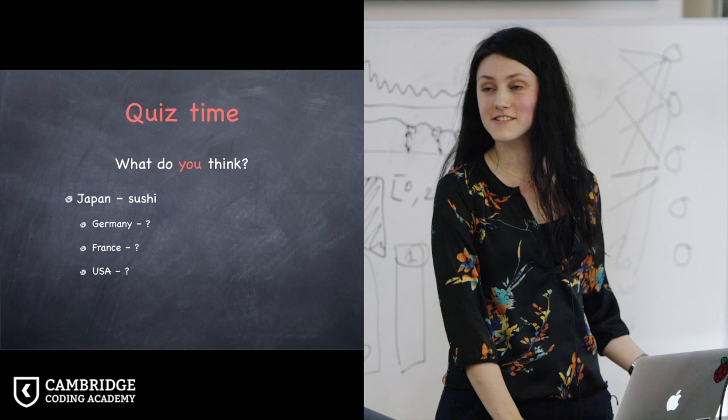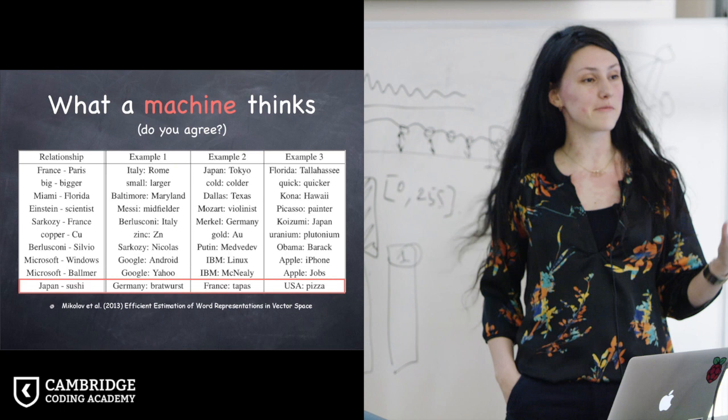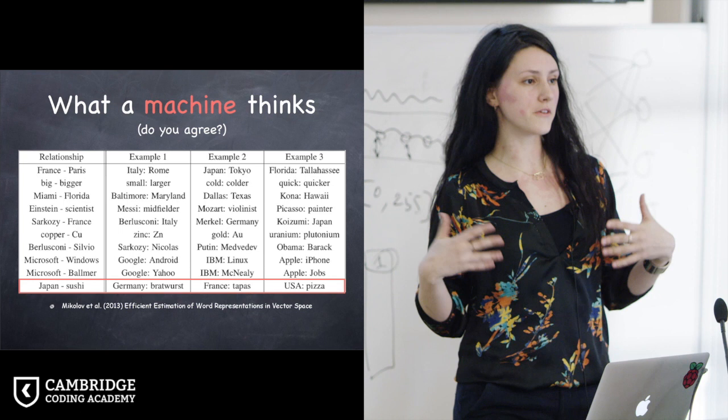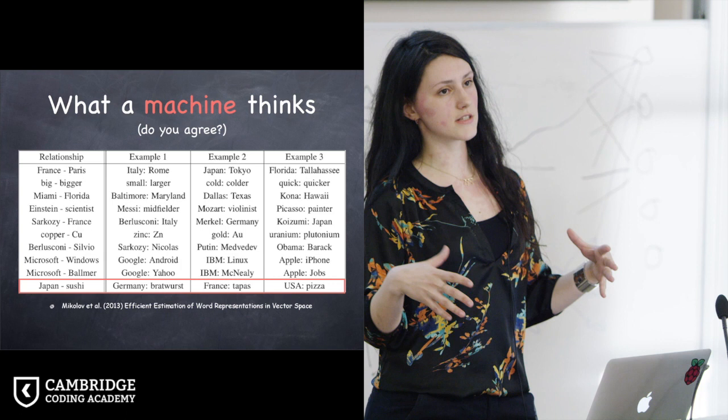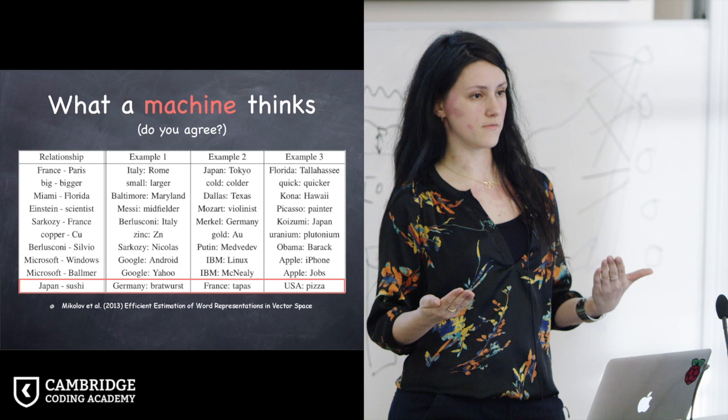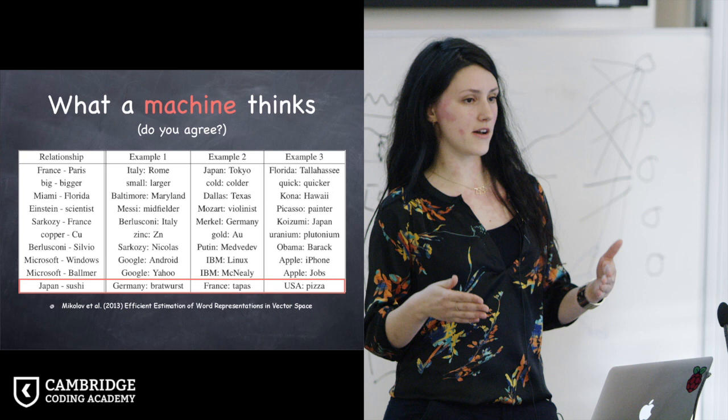So do you want to see what the machine predicted in that case? It's Germany bratwurst, France tapas, and USA pizza. So you see, it's not always kind of following the human reasoning and human logic. But in a way, we can see, maybe using our knowledge about the machine learning fields now, that what it uses as the basis for prediction is a lot of data that it has been exposed to. That's why this kind of reasoning might be not very same as human reasoning, but quite close still. So this is quite an impressive result already, believe me.